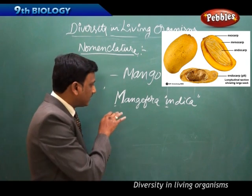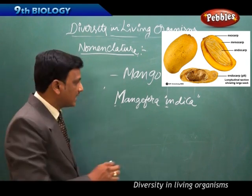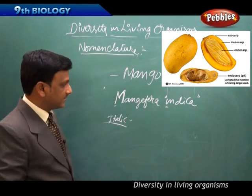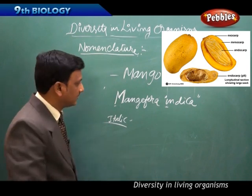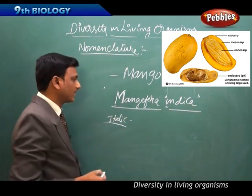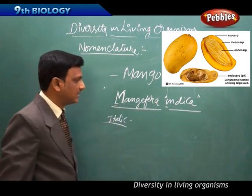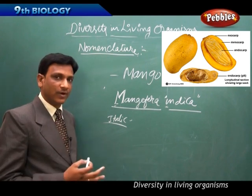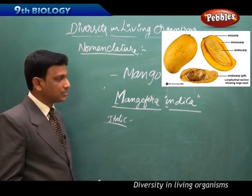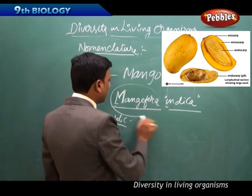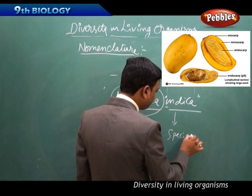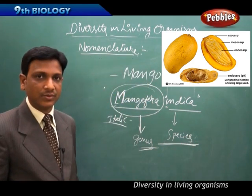When writing scientific names by hand, the two names — genus and species — should each be underlined separately. Capital letter for the generic name, small letter for the specific name. For example, Mangifera indica tells us the genus (Mangifera) and species (indica) of the plant, allowing study without confusion.